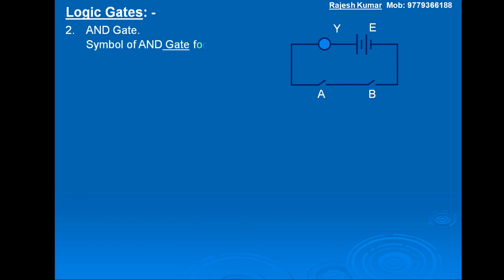The symbol of the AND gate for two inputs is as shown. This is input A, this is input B, and this is output Y. This is the symbol for the AND gate for two inputs.